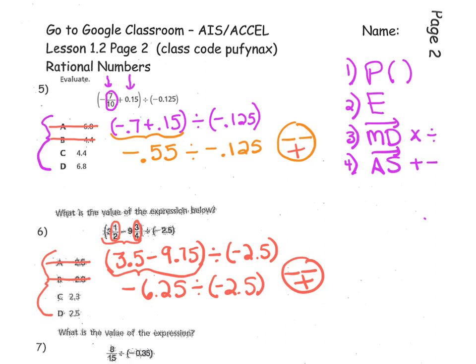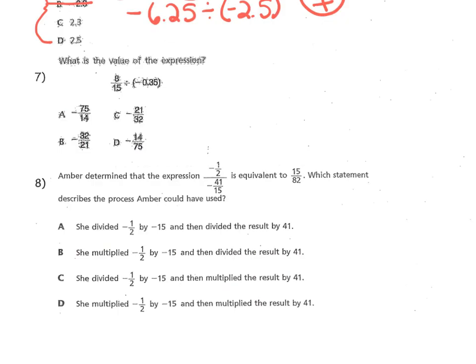Now let's move on to problem number 7. In problem number 7, once again, we have to find the value of the expression. It seems pretty simple. I have 8/15ths divided by negative 0.35. But check out our answers. They're in fraction form. So, I'm going to take the 35 hundredths and rewrite it as a fraction.